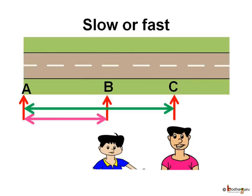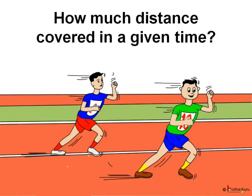In the same time, if a child moved from distance A to B while a man moved from distance A to C, then we can say the man was faster, as in the same time the man covered the greater distance while the child covered a smaller distance. We can also find who is fast or slow by finding the time different objects take to cover the same distance.